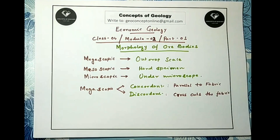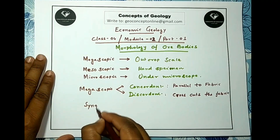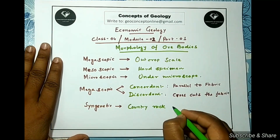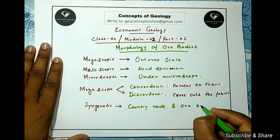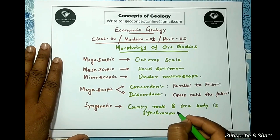In igneous petrology we read concordant and discordant for intrusions — when magma intrudes a country rock, if it cross-cuts the fabric it is discordant, otherwise concordant. There the country rocks are pre-existing. But in ore geology, a concordant ore body may form simultaneously with the country rock. These ore bodies are called syngenetic ore bodies — here the host rock and the ore body are synchronous.